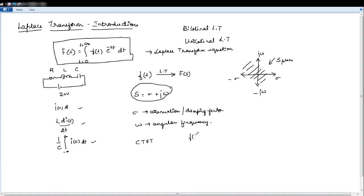Example a time domain signal F of T is equal to e power 2T u of T. 2 into T u of T. This doesn't have its Fourier transform.